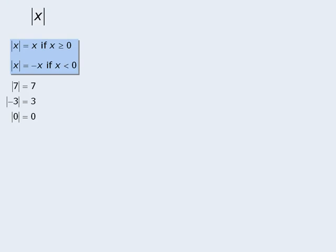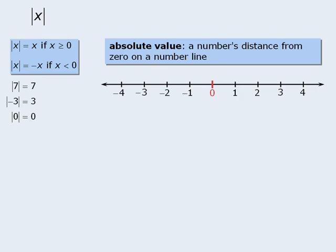Another way to define the absolute value of a number is to say that it is the number's distance from zero on the number line. So for example, to determine the absolute value of negative 4, we notice that negative 4 is 4 units away from zero on the number line. As such, the absolute value of negative 4 is equal to 4.